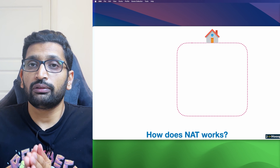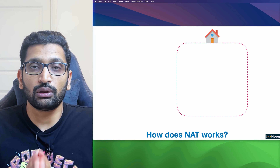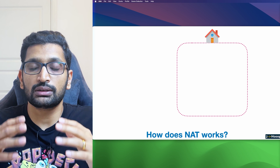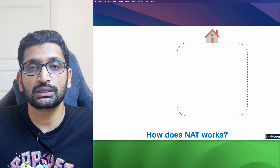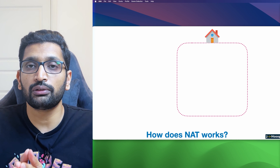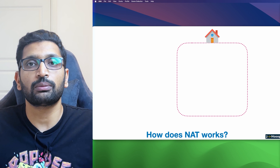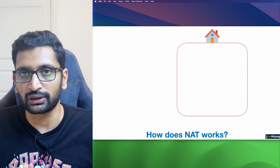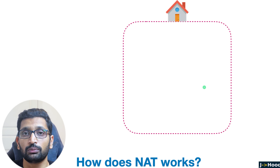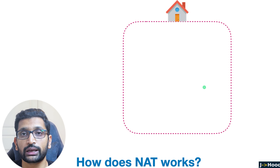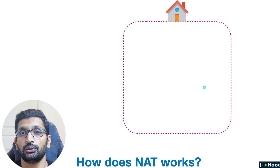So how can network address translation help us solve this problem so that public IP addresses remain available while we can still increase the number of devices in our home and private network? I am going to use a basic example of a home network to explain how network address translation helps.